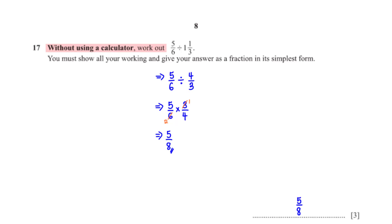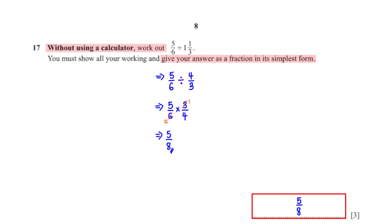Without using a calculator, work out 5/6 divided by 1⅓. Show all working and give your answer as a fraction in its simplest form. First convert 1⅓ to an improper fraction: 3 times 1 plus 1 gives 4/3. Then 5/6 divided by 4/3 becomes 5/6 times 3/4. Simplifying: 3 goes into 3 once and into 6 twice, giving 5 over 8.